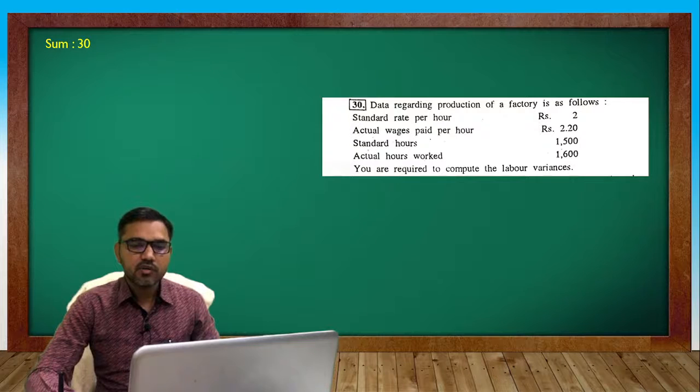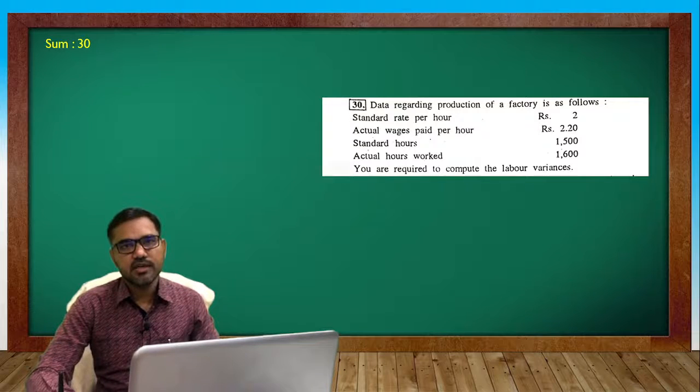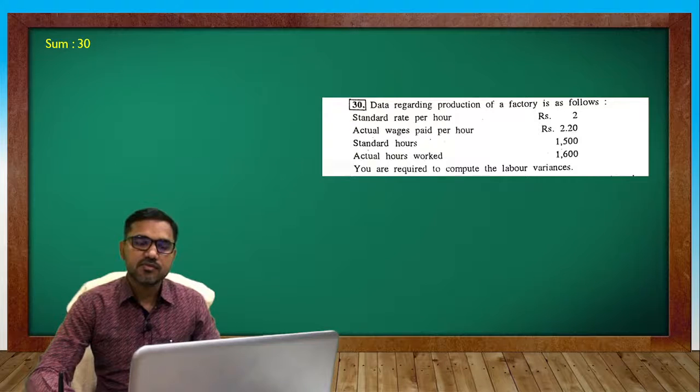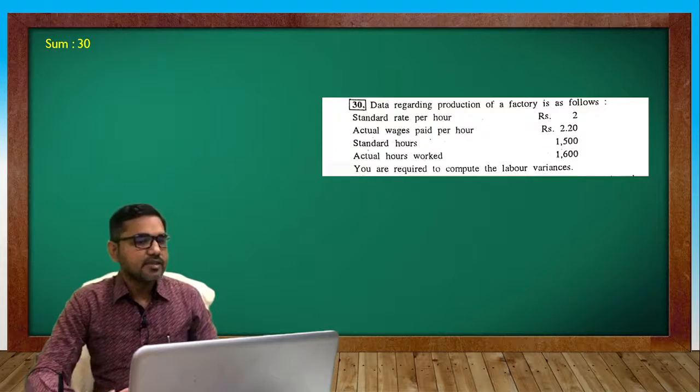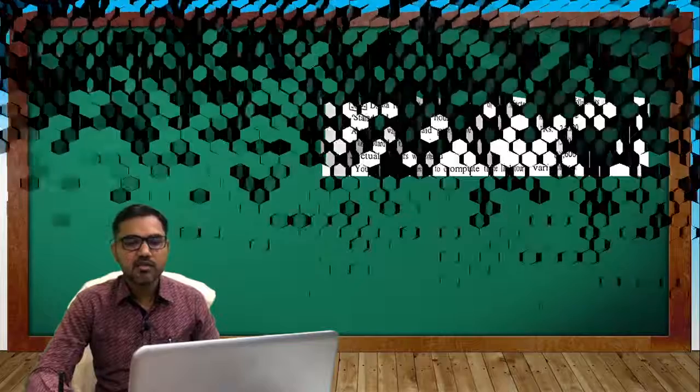Standard rate per hour 2, actual wage paid per hour 2.20, standard hours 1500, actual hours 1600. You are required to compute the labor variances. Standard rate, actual rate, standard hours, actual hours. So just apply the formula and do the calculation.